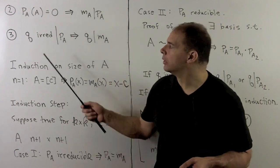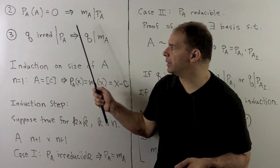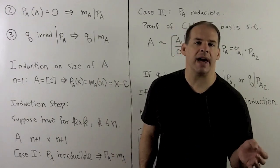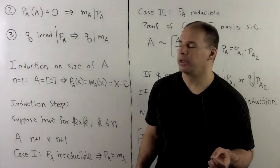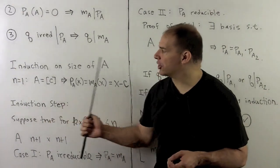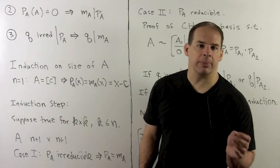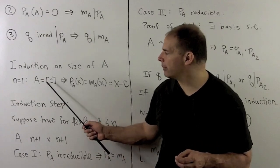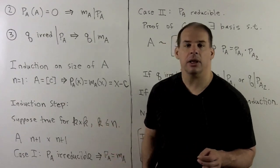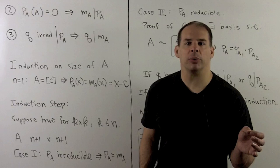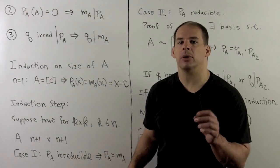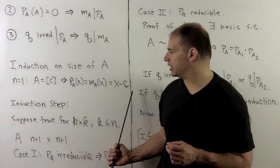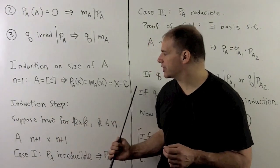For the third part, we're going to show if Q is an irreducible that divides P_A, then Q divides M_A. Now, we'll proceed by induction on the size of A. So for the base case, we assume A is one by one. So A is just some number C. And we have the characteristic polynomial and minimal polynomial are equal, both being equal to X minus C. That gives our base case.